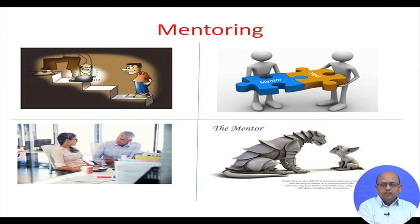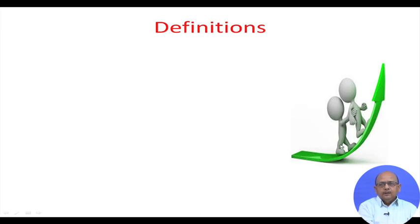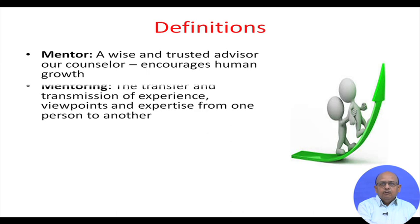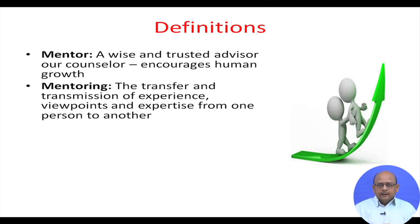These pictures explain the concept of mentoring: the mentee or protege, and the mentor trying to help them grow and develop. The definition of mentor suggests that a mentor is someone who is wise, interested, and acts as an advisor or counselor to increase the growth and development of people. Mentoring is the process through which the mentee learns — the transfer and transmission of experience, perspectives, and expertise from one person to another.